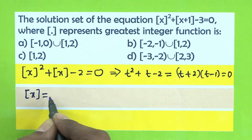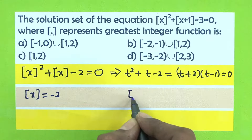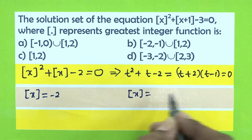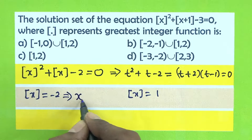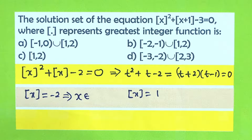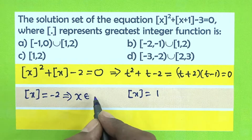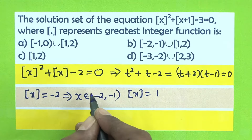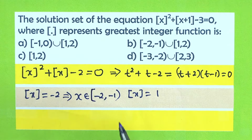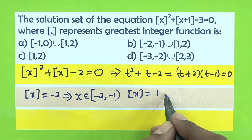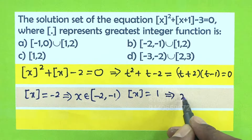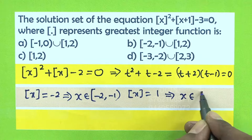So integral part of x equals -2, or integral part of x equals 1. If integral part of x equals -2, this implies x belongs to [-2, -1). If integral part of x equals 1, this implies x belongs to [1, 2).